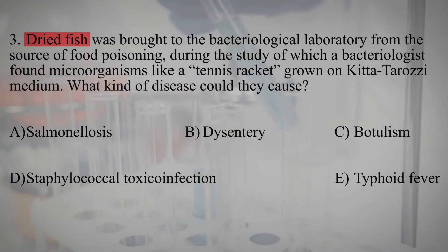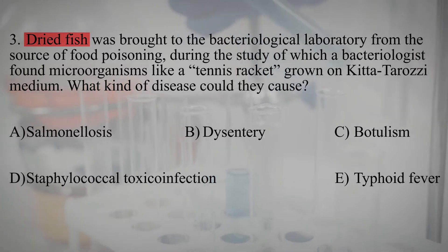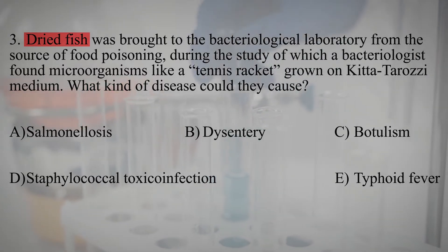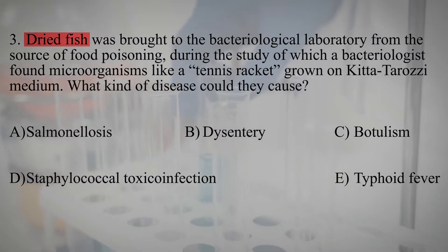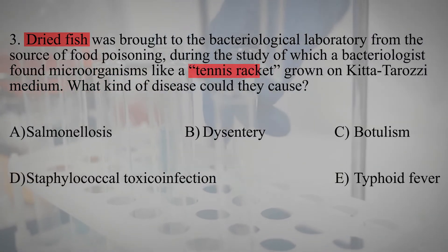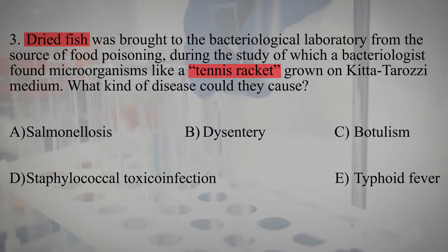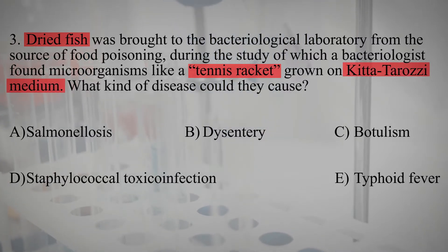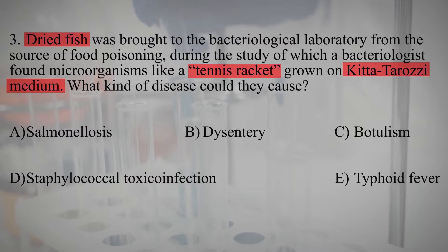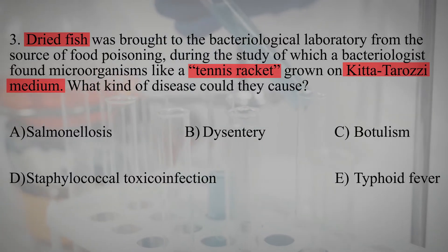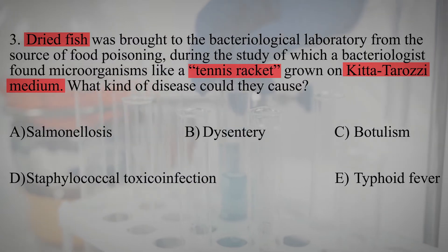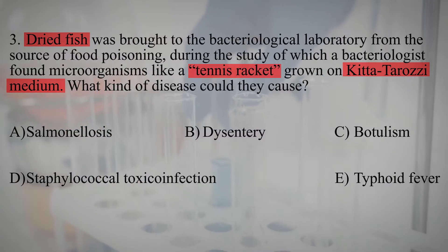Dried fish was brought to the bacteriological laboratory from the source of food poisoning. During the study, a bacteriologist found microorganisms shaped like a tennis racket, grown on Ketatorozi medium. What kind of disease could they cause? The main keywords in this test are dried fish, tennis racket, and Ketatorozi medium.